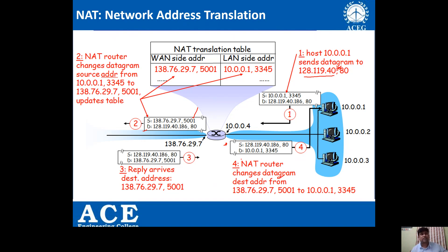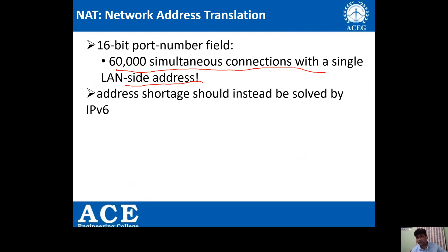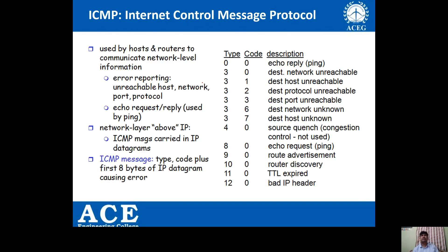With a 16-bit port number field, NAT supports up to 60,000 simultaneous connections with a single LAN-side address. This helps address shortage, but it is only a temporary solution. For a long-term solution we have to replace IPv4 with IPv6.